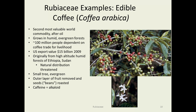Coffee originally comes from high-altitude humid forests in Africa. The natural distribution is threatened today by development, and there are some efforts being made to preserve those lands. The outer fruit is removed and the beans are roasted — they are just seeds, not actually beans. Caffeine is an alkaloid, like so many of the other chemically active compounds found in this family.